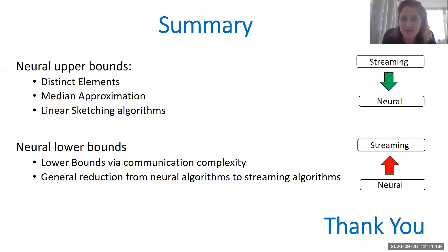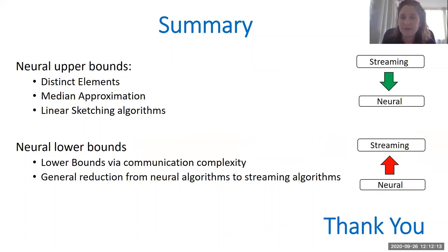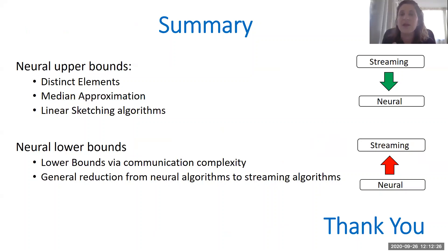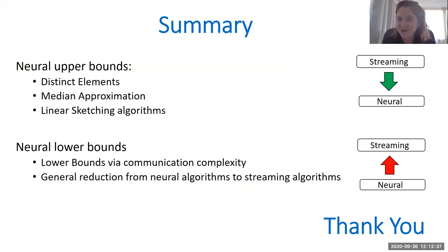To sum things up, in this work we studied the connection between streaming algorithms and neural algorithms. First, we showed how to obtain neural algorithms from known streaming algorithms for some fundamental streaming problems. Then in the other direction, we showed how to obtain neural lower bounds from streaming lower bounds obtained using reductions to communication complexity. And more generally, we gave a general reduction that takes any neural algorithm and translates it into a streaming algorithm. Thank you for listening.